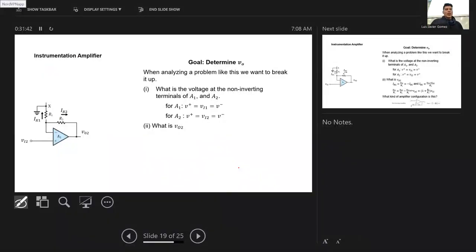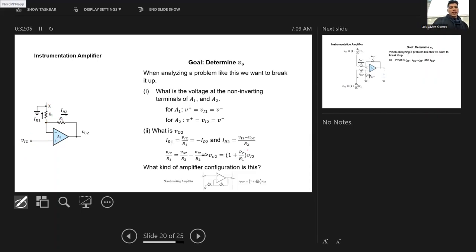Now let's look at the bottom one. What is VO2? It's the exact same thing. If you look closely, the two amplifier configurations look the same. You have the input on the plus side, and you have two resistances in between. So you're going to get the same nodal equation. As a result, you're going to get that it's just 1 plus R2 over R1 times VO2. So now you know what VO2 is, and you know what VO1 is.